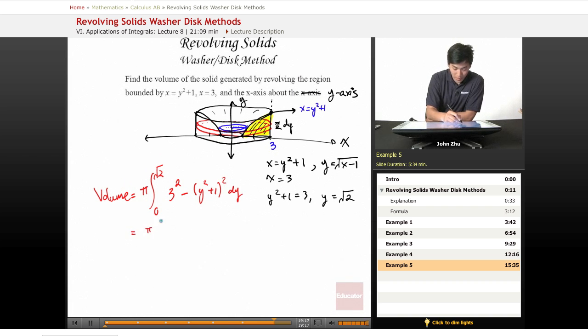So if we multiply this out, 0 to square root of 2, 9 minus y to the 4th minus 2y squared minus 1. Be careful when you substitute and not to lose order of operations points. That would be silly. OK.